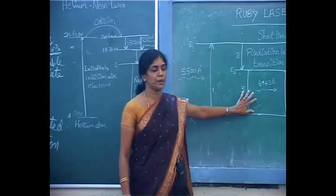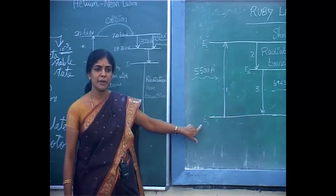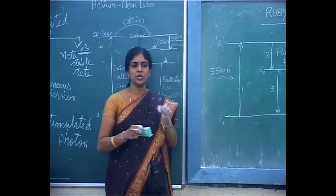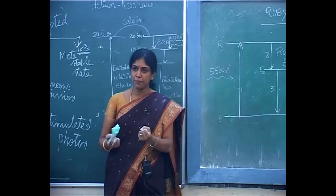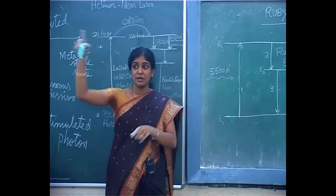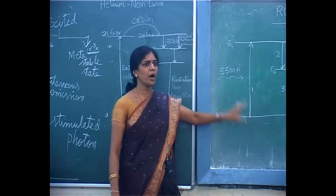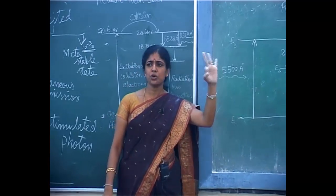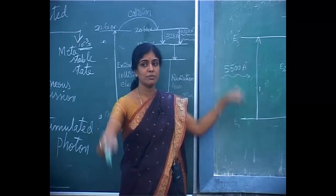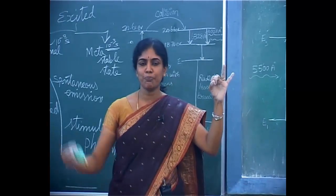Now we will see how it works. This is the energy level diagram. This is the ground level with energy E1. The number of atoms in the ground state is more than in the excited state initially. By initial optical pumping — the xenon flash tube irradiates light — the atoms gain energy and jump from ground state. All atoms in the excited state become more than in the ground state — that is population inversion.